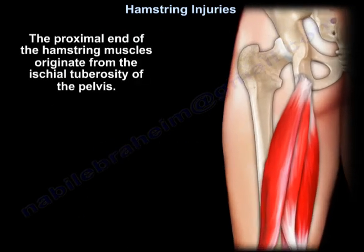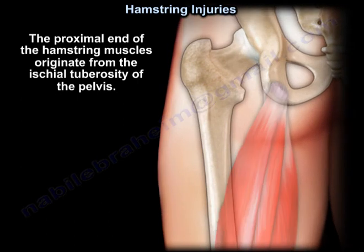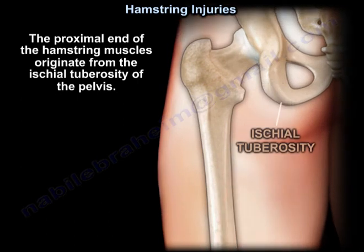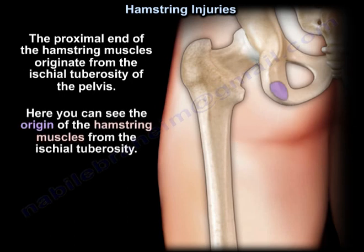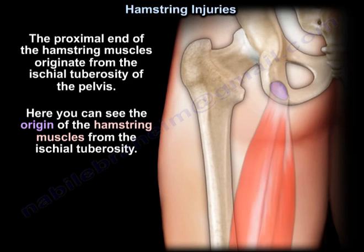The proximal end of the hamstring muscles originate from the ischial tuberosity of the pelvis. Here you can see the origin of the hamstring muscles from the ischial tuberosity.